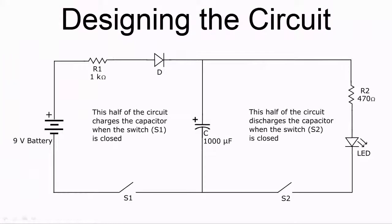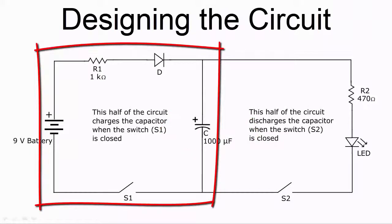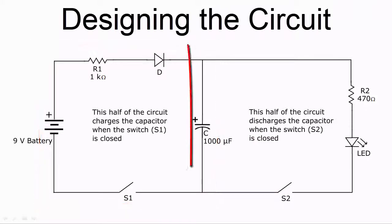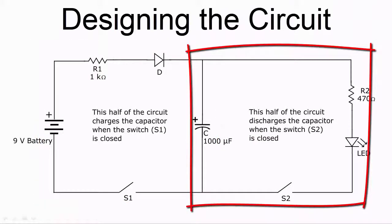So here's the circuit. I think the easiest way to think of it is to view it as two small circuits with the capacitor as the common component in each circuit. The mini circuit on the left is used to charge the capacitor and the mini circuit on the right is used to discharge the capacitor.